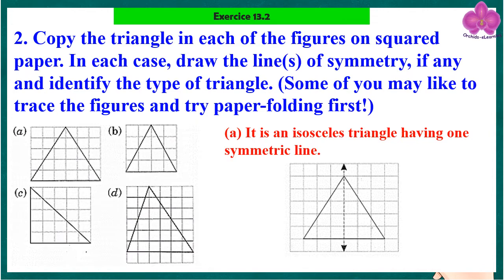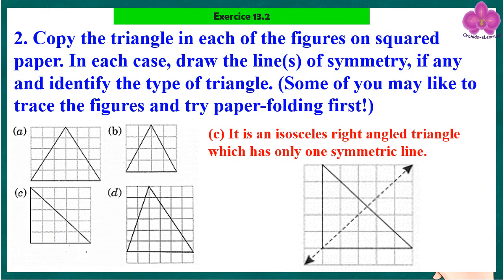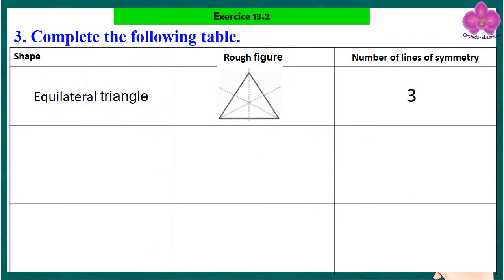Question 2: Copy the triangle in each of the figures on squared paper. In each case, draw the lines of symmetry if any, and identify the type of triangle. Some of you may like to trace the figures and try paper folding first. For figure (a), it is an isosceles triangle having one line of symmetry. Figure (b) is also an isosceles triangle having only one line of symmetry. Figure (c) is an isosceles right-angle triangle with no line of symmetry.